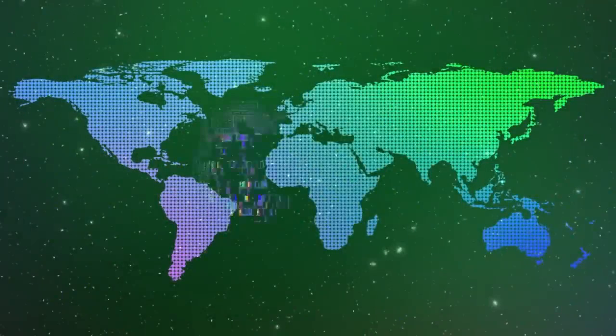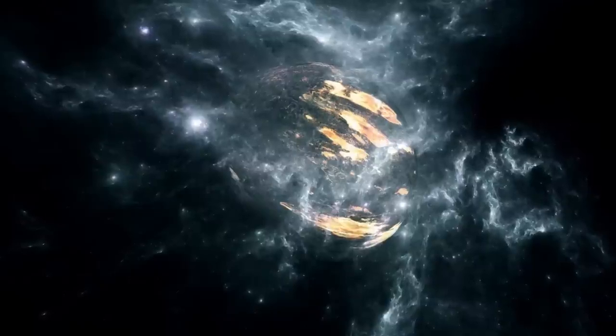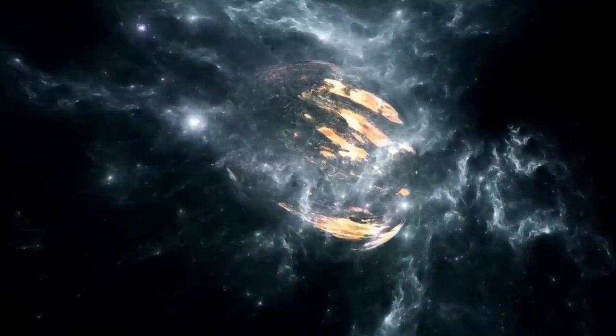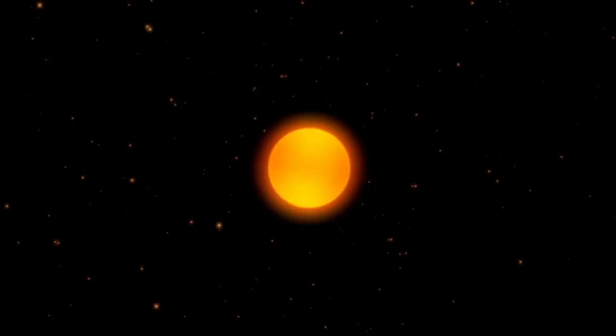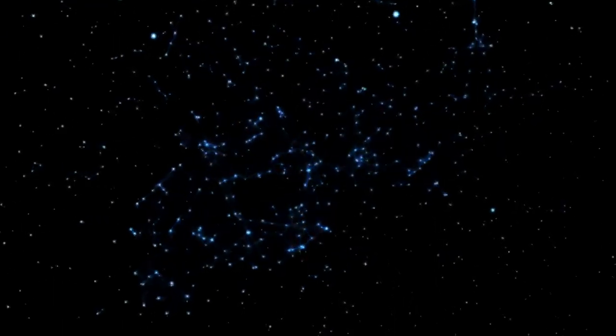This collapse triggers a violent supernova, ejecting the star's outer layers into space and releasing a burst of light and energy on an almost unimaginable scale. If Betelgeuse were to go supernova, it would be a celestial event of extraordinary magnitude. Its explosion would be so bright that it could be seen during the daytime for weeks or even months. It would temporarily rival the brightness of the full moon and become the most luminous object in the sky.